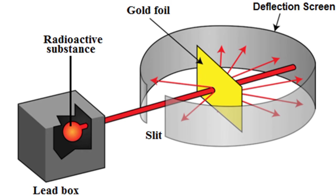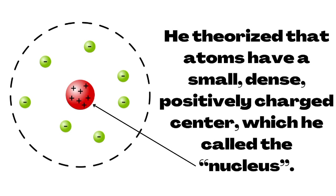In 1908, he performed an experiment using positively charged particles fired at gold foil. Through his experiment, he proved that atoms are not a pudding filled with a positively charged material. He theorized that atoms have a small, dense, positively charged center, which he called the nucleus. He said that the nucleus is tiny compared to the atom as a whole, because the atom is mostly open space. He concluded that the negatively charged particles are scattered outside the nucleus at a distance.